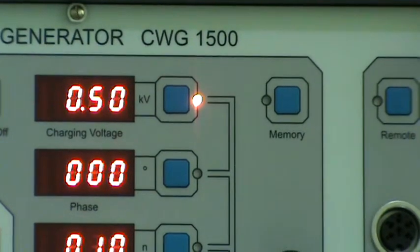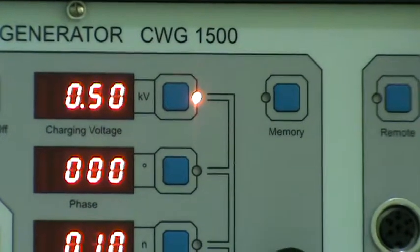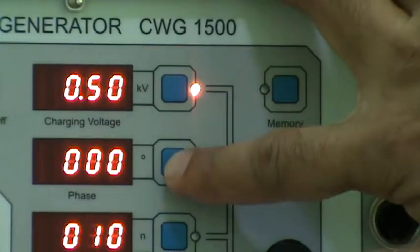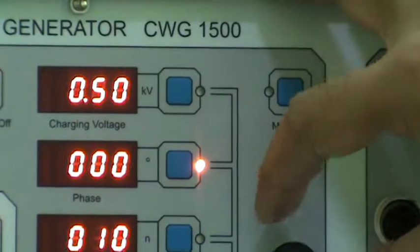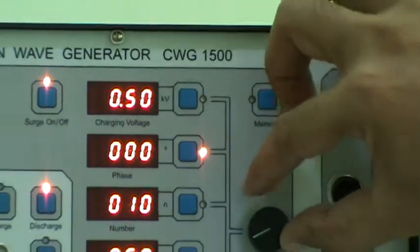For selecting the phase at which we want to induce the surge, we have to select the phase by pressing this button degree and by rotating this encoder. Let it select to 90 degrees.